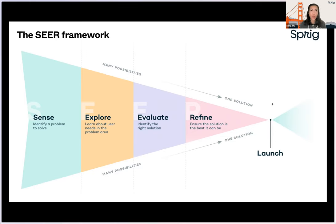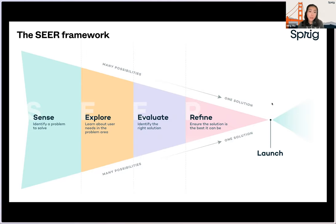Let me walk through this framework quickly. Sense is the stage where you try to identify the problem you want to solve for and identify your North Star metrics — what you want to optimize for. There are many different possibilities based on your problem, and you want to bring in different solutions. During the Explore phase, you try to get a little bit more in-depth insight in terms of user needs in the problem area that you identified. You might conduct one-on-one interviews, observe how people interact with your product, gather product analytics, and eventually develop different hypotheses for solutions that can solve the problem.